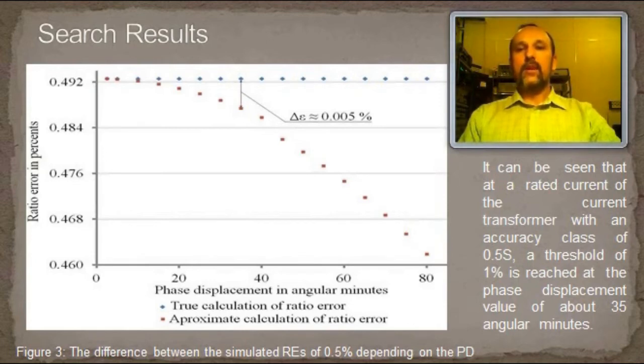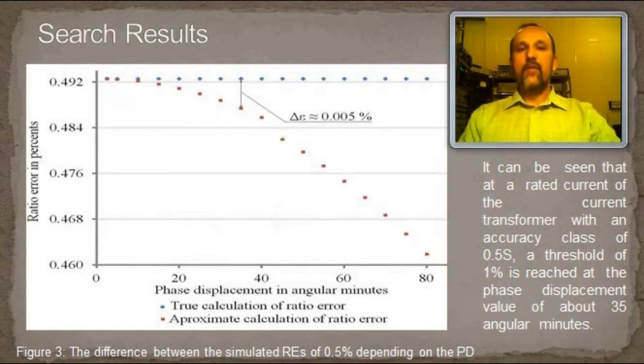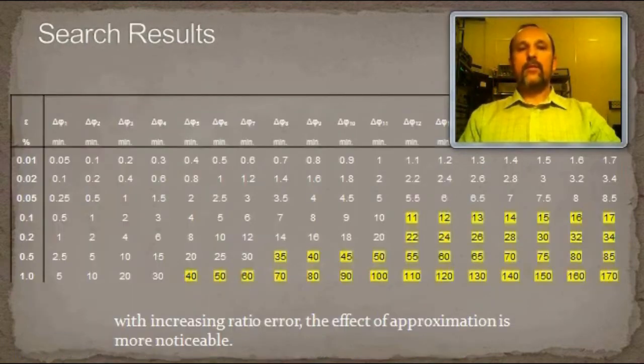The impact of the approximation can be considered to be negligible, and that is confirmed by the simulation results. Returning to the table of set phase displacements, it should be noted that with increasing ratio error, the effect of approximation is more noticeable. This is reflected by the phase displacement on a yellow background. At these values, the effect of approximation is already noticeable.